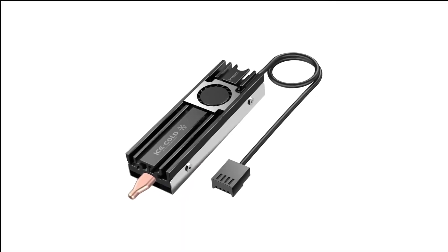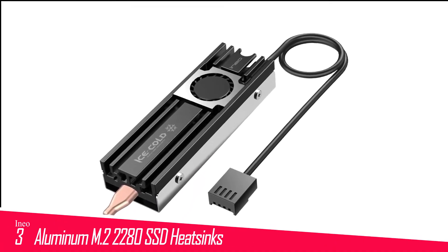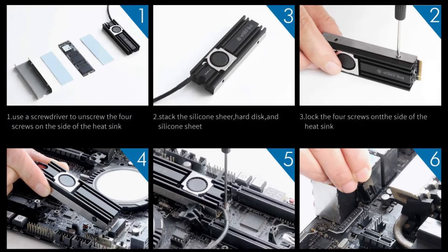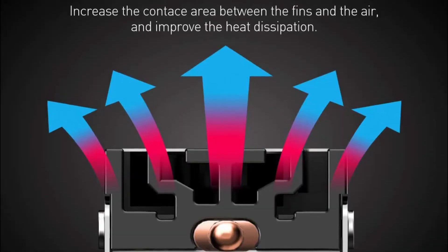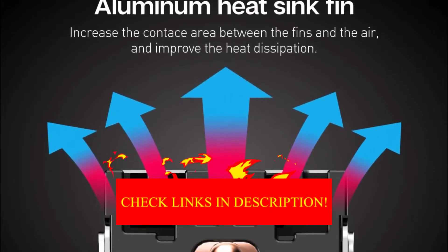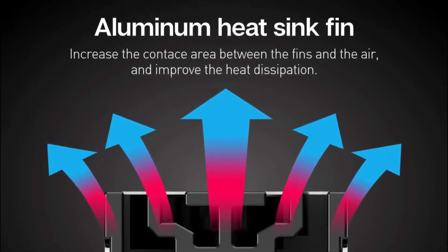Number 3 in my list, INEO Aluminum M2 2280 SSD Heatsinks. If you're looking for an M2 heatsink with an extra cooling oomph, then this might be it. This heatsink from INEO comes with a 20mm fan to dissipate heat a little quicker.